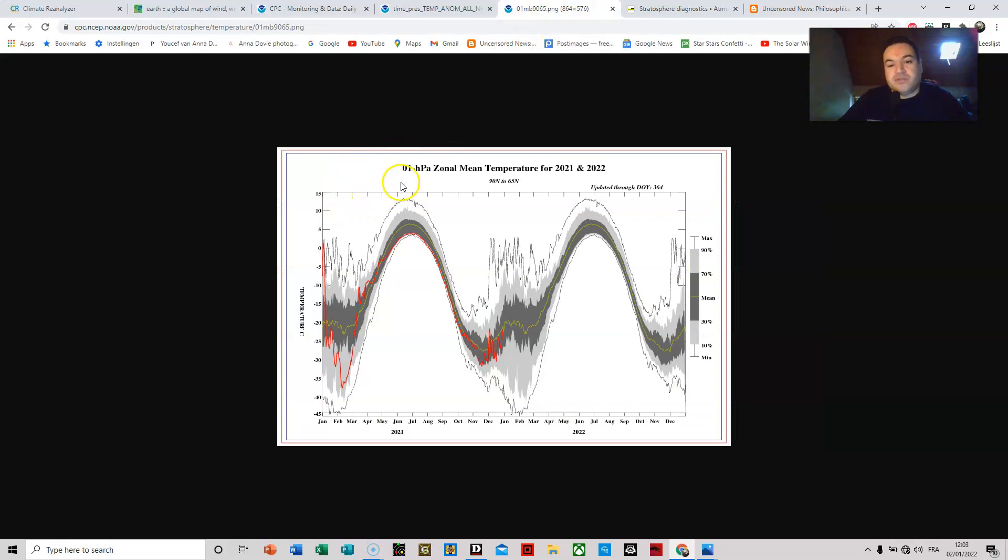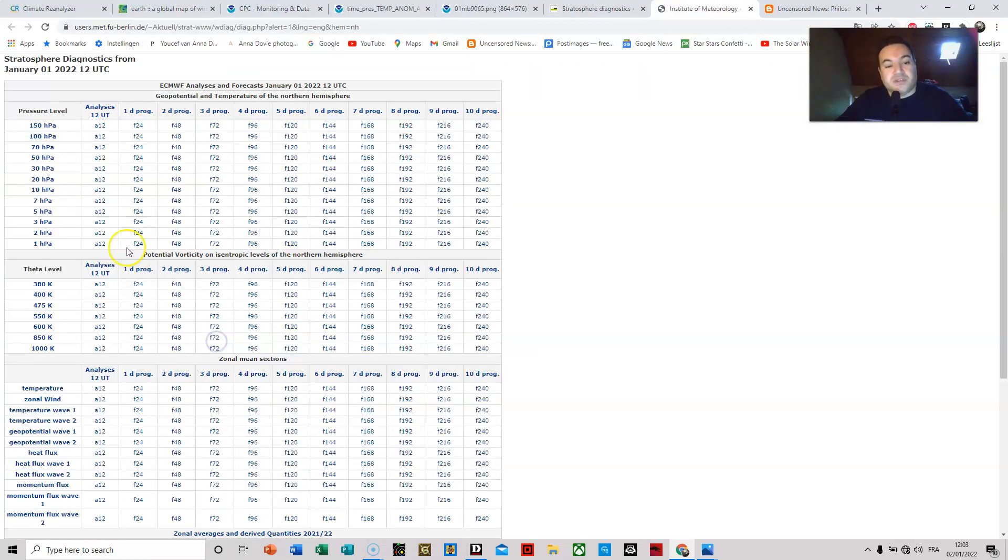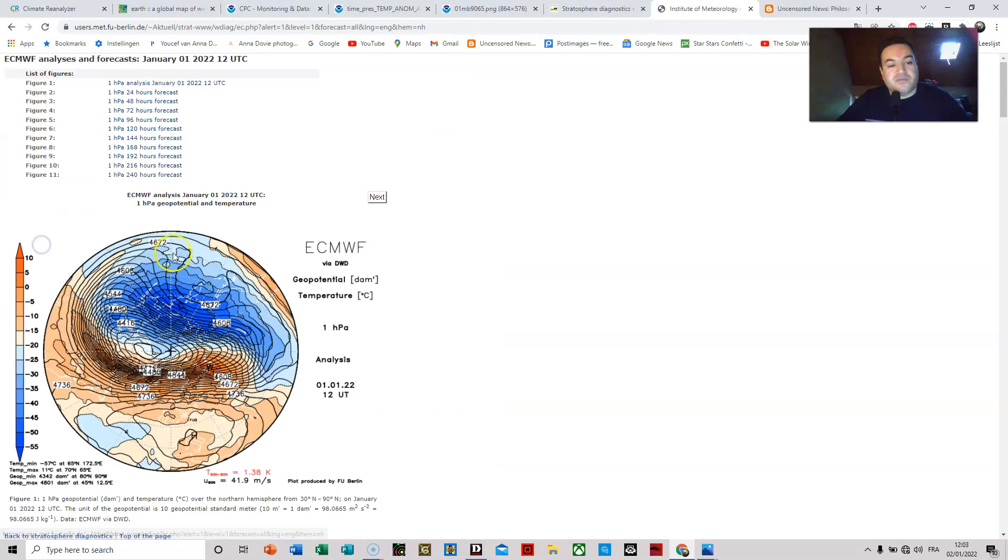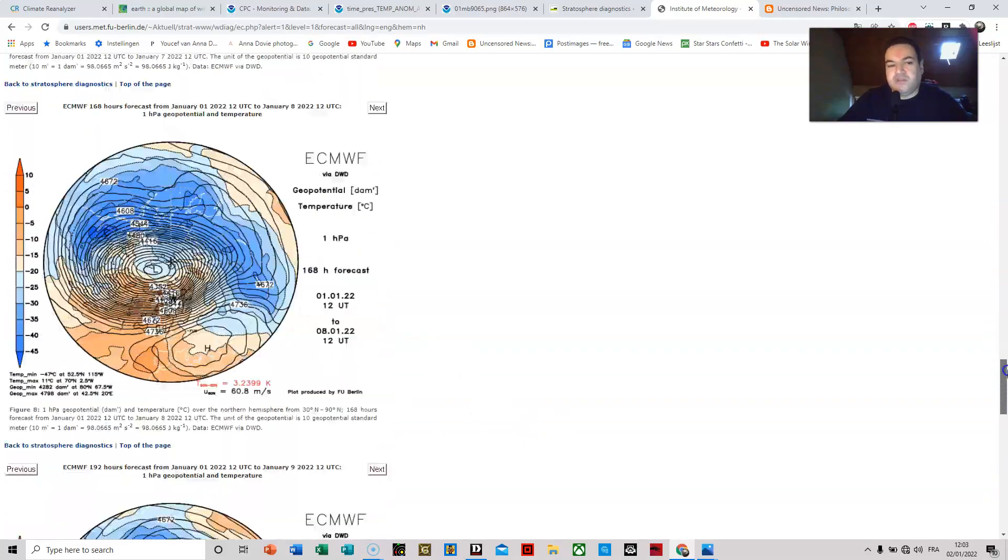If you look at the zonal mean temperatures of the Arctic region, we can see there is a little bit of fluctuation but no major spikes. Looking at the forecast actually of the polar vortex at 1 millibar, and this is a forecast that stretches all the way to 250 hours, so I think this is one week or so.